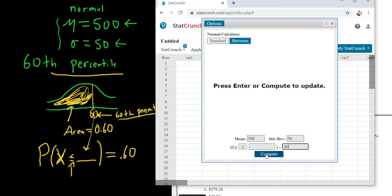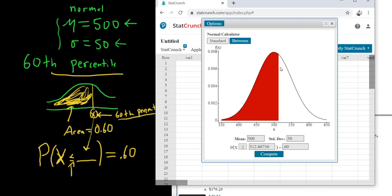And then you click Compute, and look what happens. Boom. We pretty much have almost the same picture. Okay, their picture is a little bit better. But you see, the number that is here is 512.67. So that would be the 60th percentile.